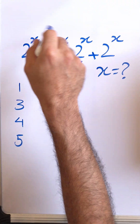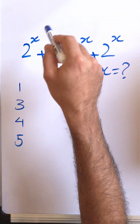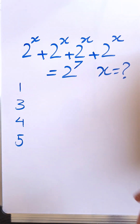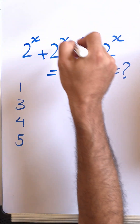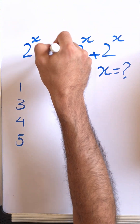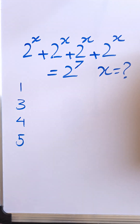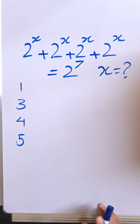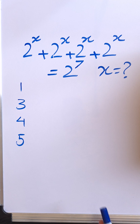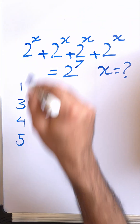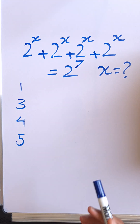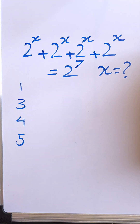So obviously students were just adding the exponents together, which is wrong. You can't add exponents because the sign here is just an addition operation. This is not a multiplication. You are allowed to add exponents only if that's a multiplication.